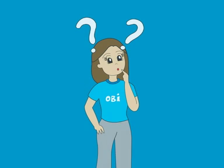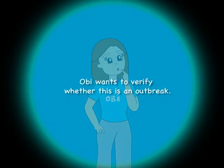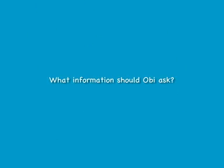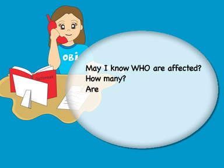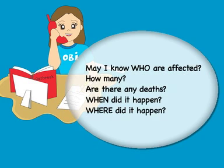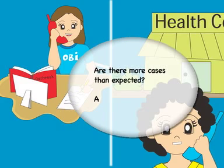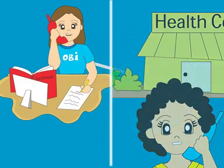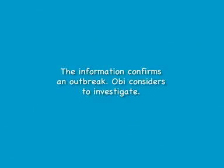What questions should Obie ask herself? Is this an outbreak? Obie wants to verify whether this is an outbreak. What information should Obie ask? May I know who are affected? How many? Are there any deaths? When did it happen? Where did it happen? Obie checks whether artifacts could have caused the increase in the number of cases. Are there more cases than expected? Are there changes in case reporting? Are there new technologies introduced? How about new staff members? The information confirms an outbreak.